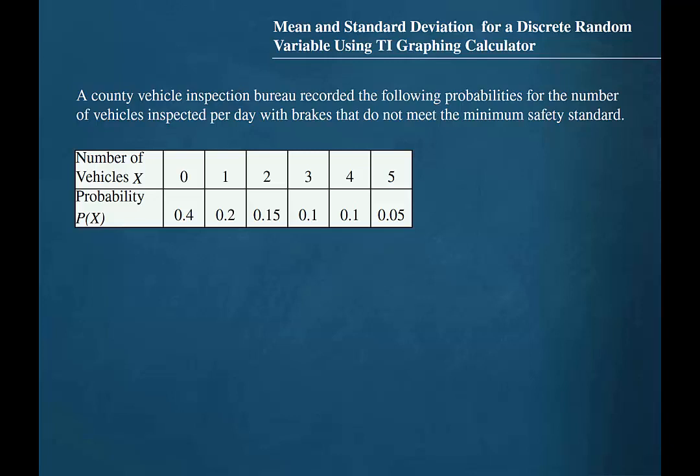A County Vehicle Inspection Bureau recorded the following probabilities for the number of vehicles inspected per day with brakes that do not meet the minimum safety standard. The table contains the number of vehicles with unsafe brakes from 0 to 5 and their respective probabilities.